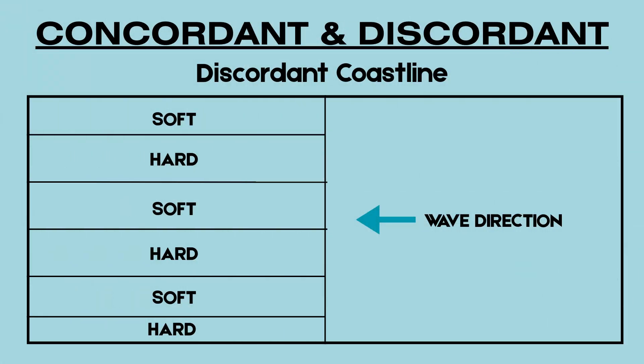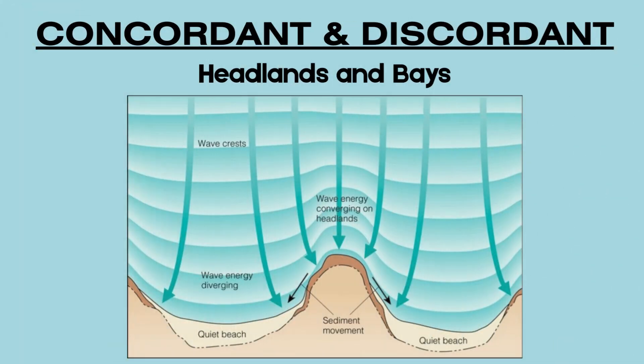Discordant coastlines are where different types of rock run perpendicular to the shore, meaning layers of hard and soft rock alternate along the coast. You can see in this diagram how different rates of erosion can occur. On discordant coastlines, headlands and bays form. Over time, the softer rock — like clay or sand — erodes more quickly than the harder rock, like limestone or chalk. This uneven erosion creates bays where the soft rock has worn away, and headlands where the hard rock is left protruding. Wave energy converges on the headlands, meaning it's more concentrated and powerful there, leading to intense erosion which can form features like cliffs, caves, and arches.